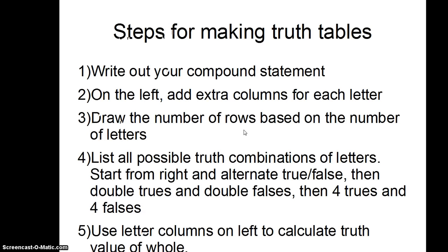Let's review the steps. First, write out your compound statement, and on the left add extra columns for each letter. Next, draw the number of rows based on the number of letters. Then list all possible truth combinations of letters — start from the right letter and alternate true and false, then go to the next letter left and put double trues and double falses, then four trues and four falses, doubling each time. Finally, plug in the truth values of the parts on each row to calculate the truth values of the whole.